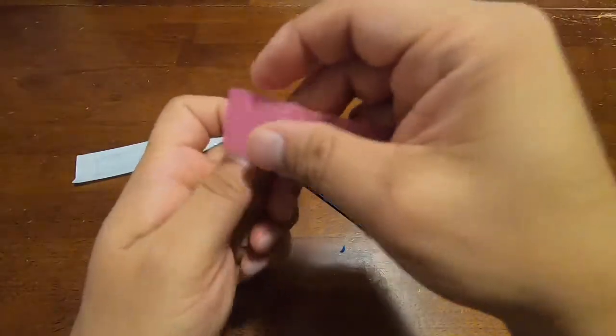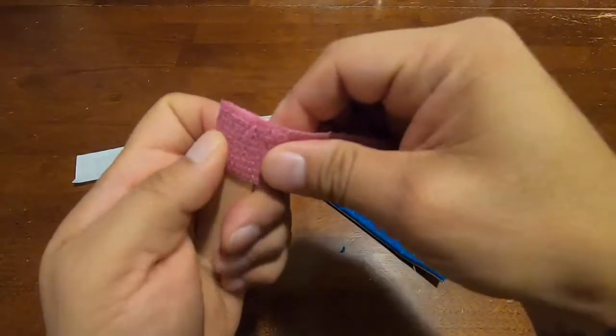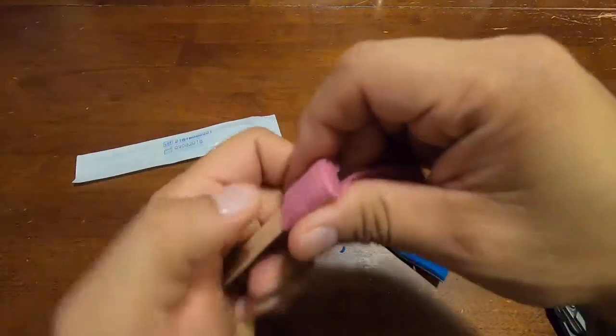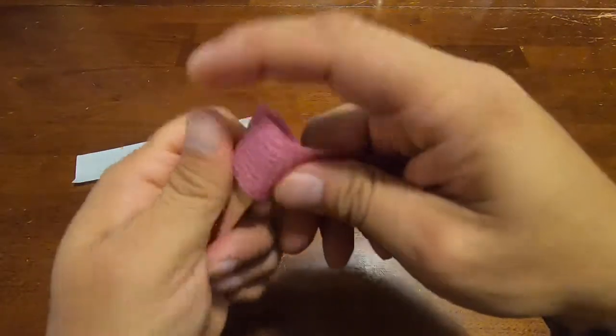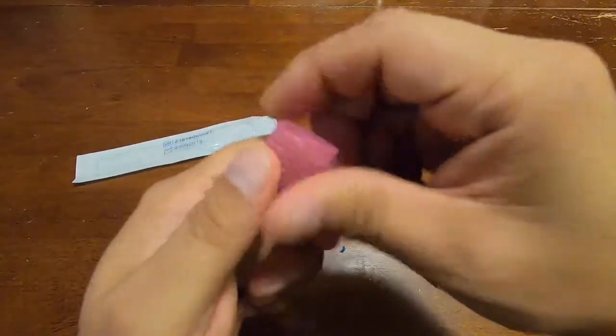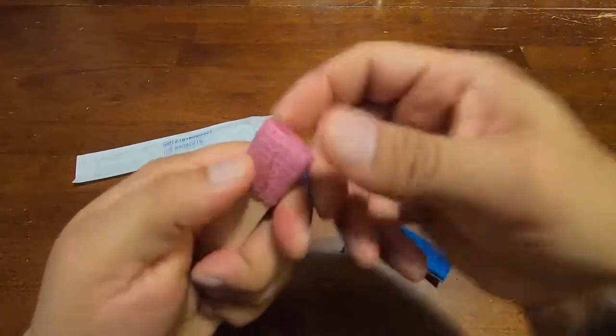All right, there we go. So now you'll just cover the end like we did with the aluminum splint, and there we go, just wrap it around the end.